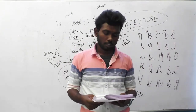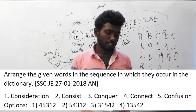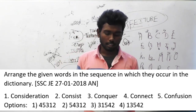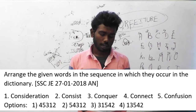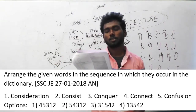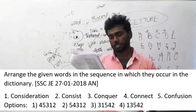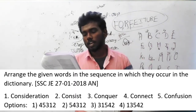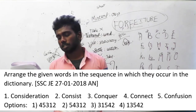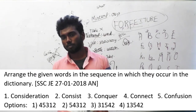Let's move on to question 156. Arrange the given words in the sequence in which they occur in the dictionary. The options are: consideration, consist, conquer, connect, confusion. If you arrange in dictionary order, the answer is option B: 5, 4, 3, 1, 2. This question was asked in SSC JE, 21st January 2018, afternoon session.